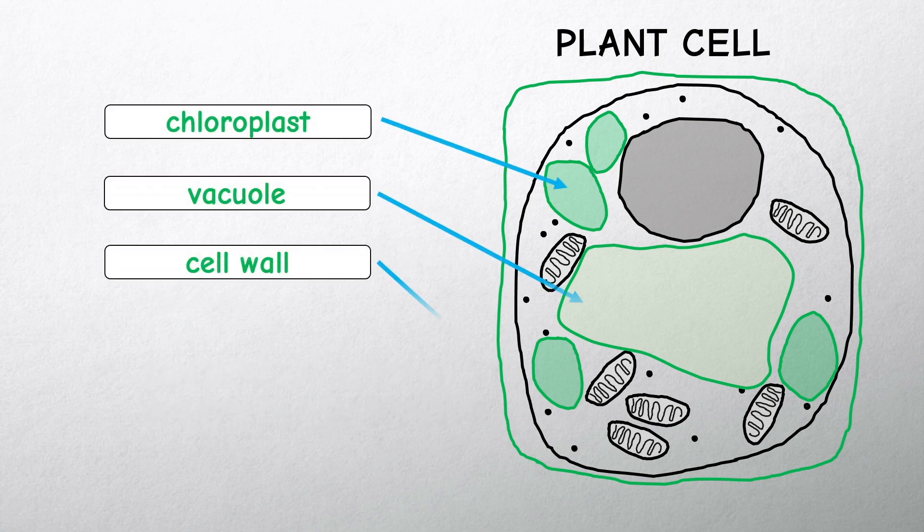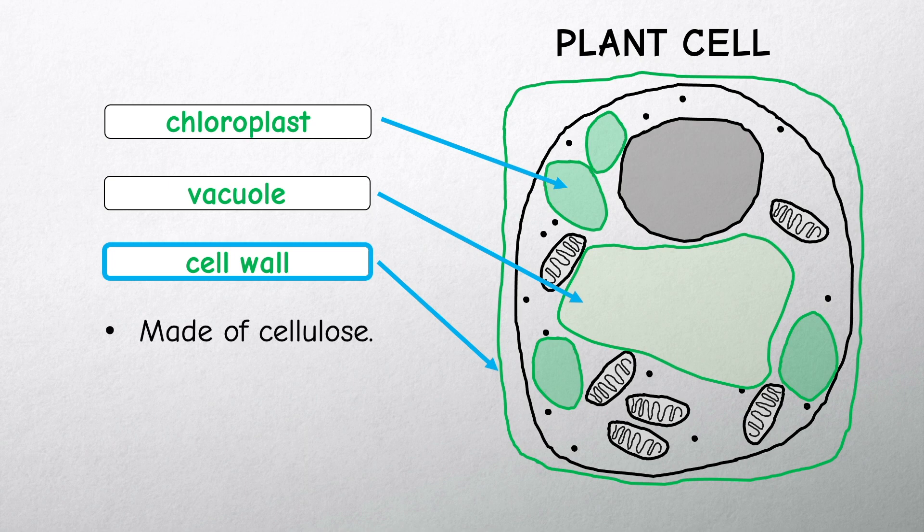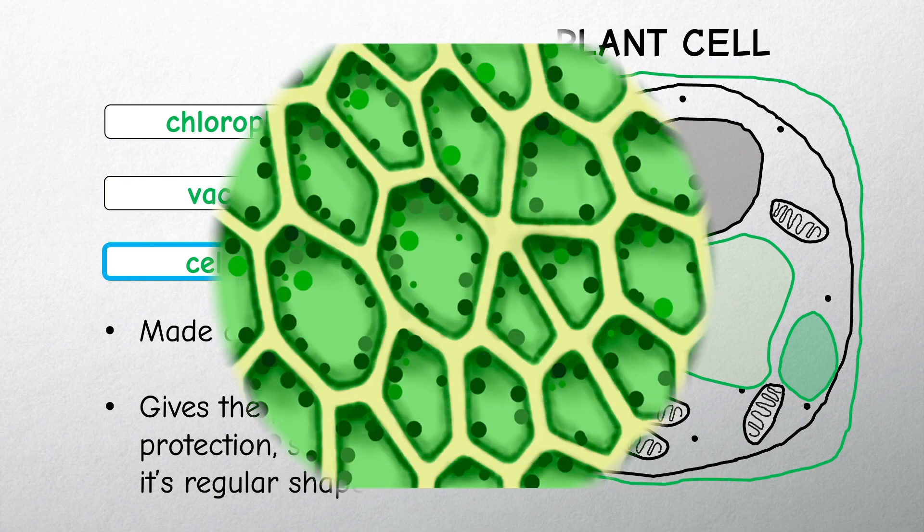Around the outside of a plant cell is the cell wall. This is the layer made of cellulose and gives protection and helps support the cell. It also gives plant cells their regular shape when we see them under the microscope.